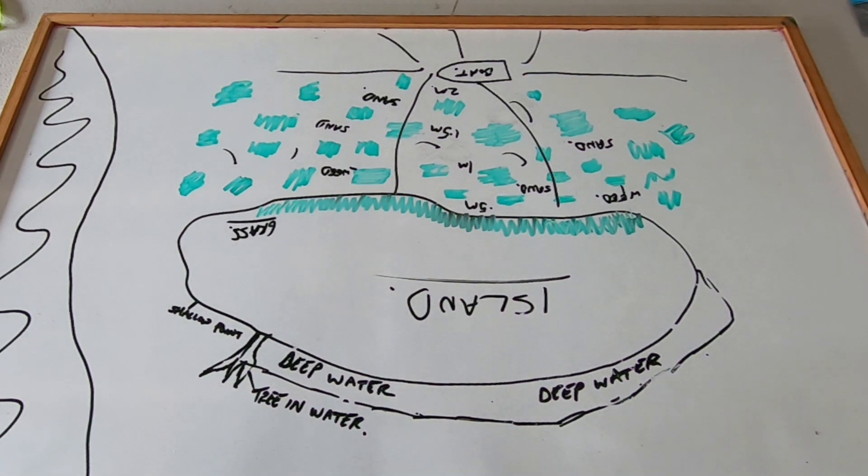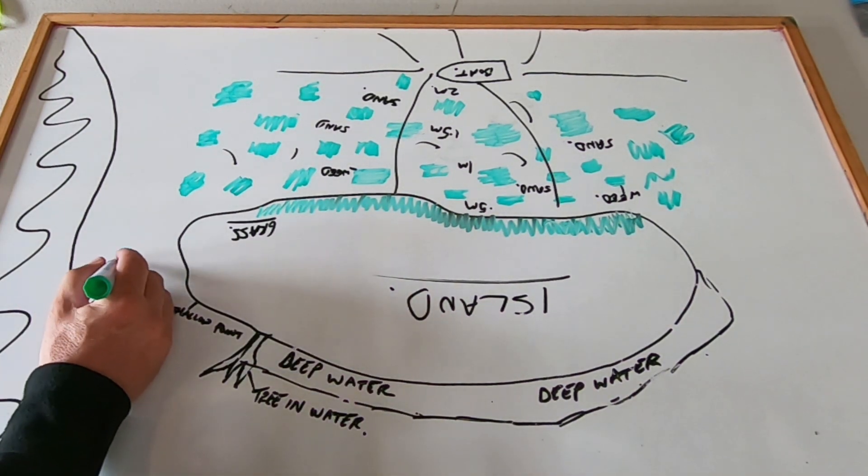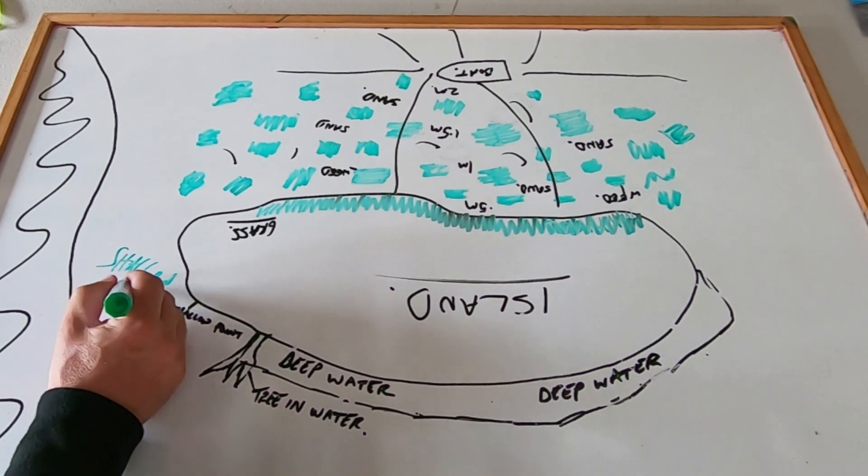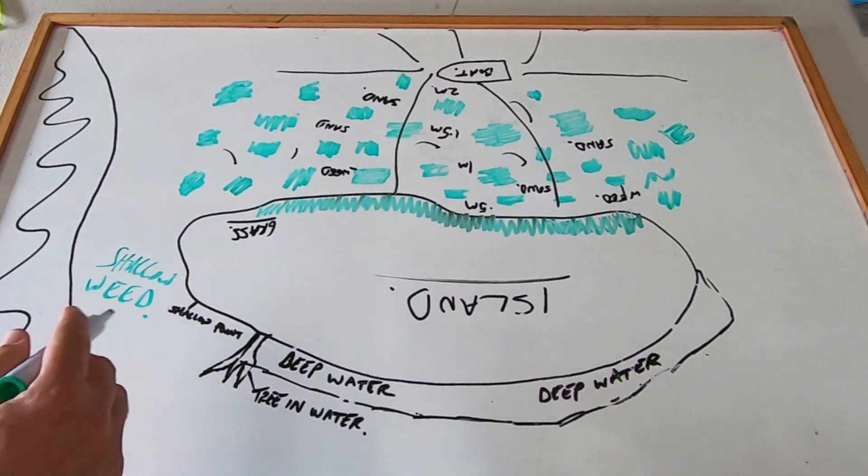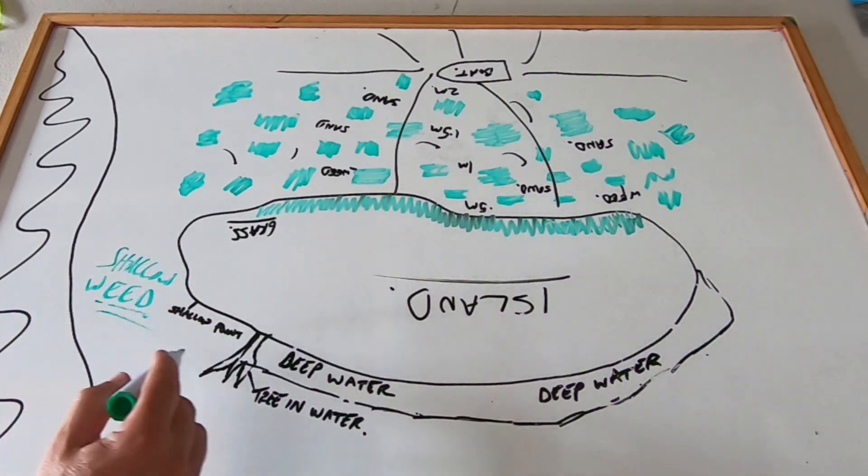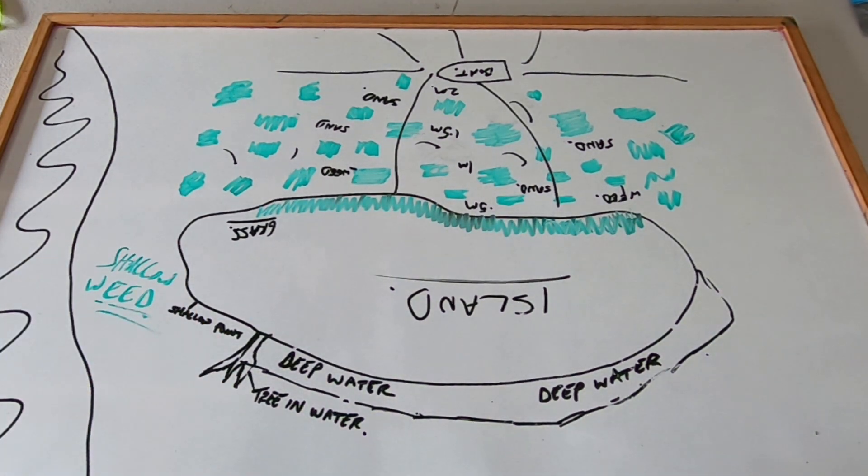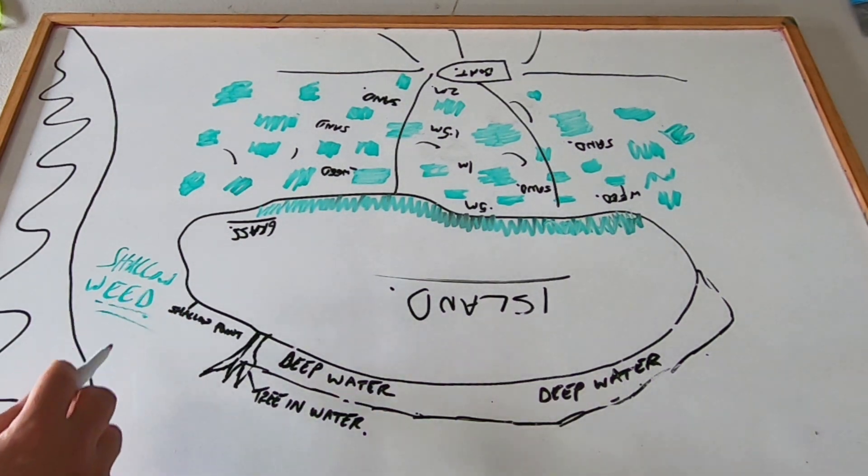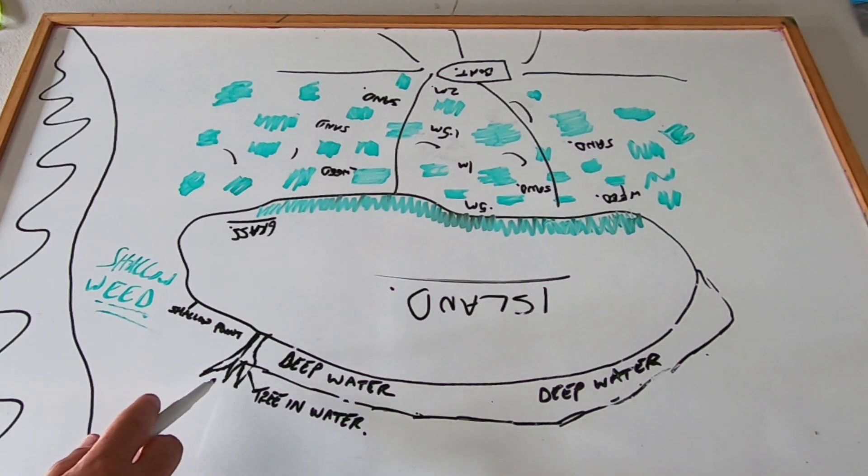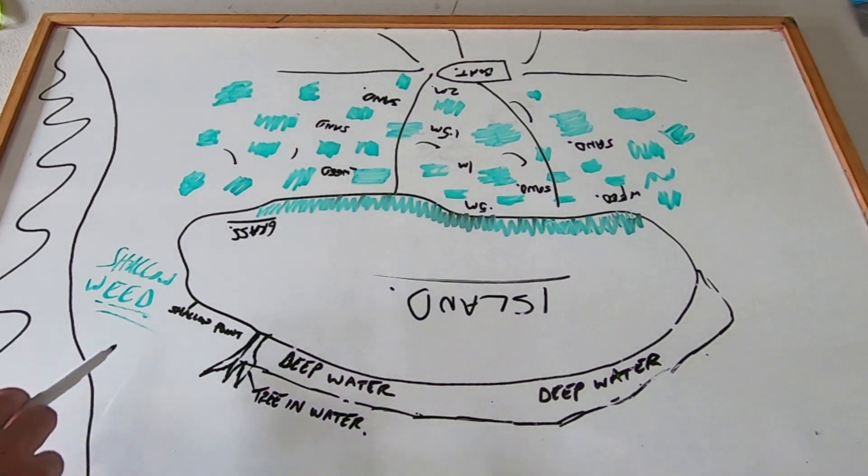On this side there was a lot of shallow weed on this point right here - you're talking a meter of water. As we came down to the right side this was very shallow and there was a lot of bream. As soon as I pulled up to this island there's a snag - a tree that was probably a meter under the water with a lot of little bream up to 25 centimeters swimming around on these flats.